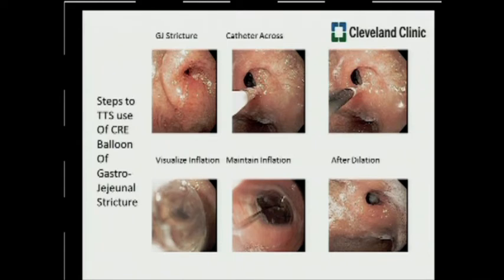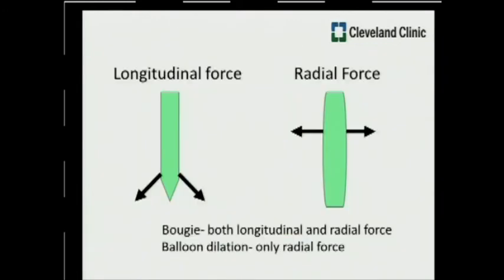One of the big advantages of the balloon over the bougie is that you can safely visualize your actual device. You can see the balloon going across the area of the stricture, make sure the balloon is completely out of the working channel, then visualize balloon inflation. I'll often pull the balloon up against the end of the endoscope and visualize through it to see the stricture itself and look for any concomitant ulcer or disease. It's also important to note that bougies provide additional longitudinal force in addition to radial force, compared to CRE balloons which typically provide only radial force.